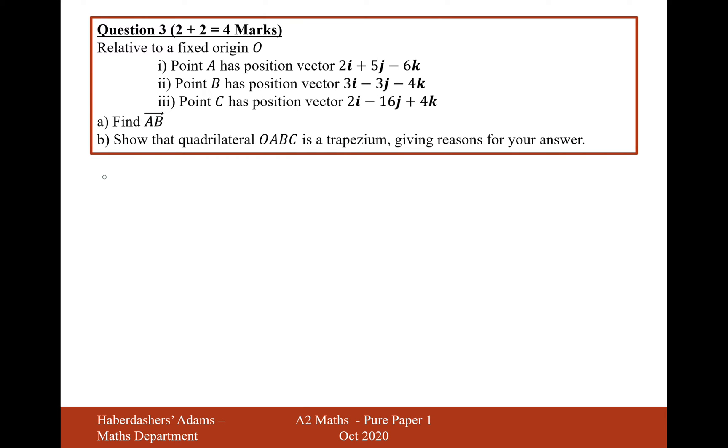Find the vector from A to B. Okay, so you can do it one of two ways. You can do coordinate B take away coordinate A: 3, minus 3, minus 4, take away 2, 5, minus 6. So it's going to be 1, minus 8, and double negative here, 2.